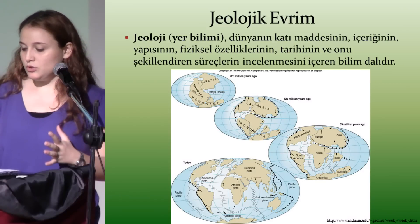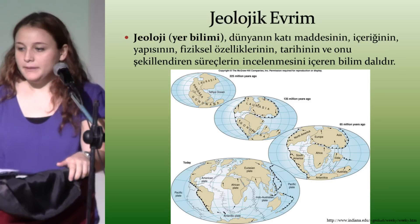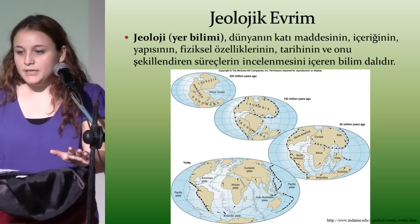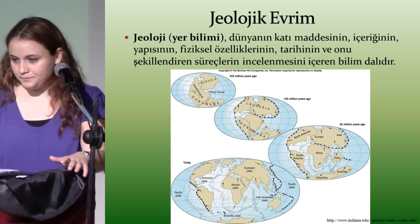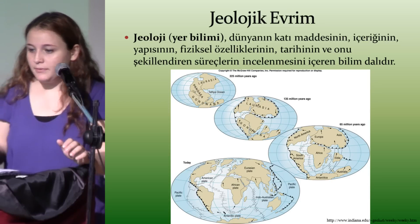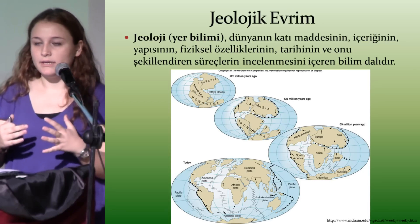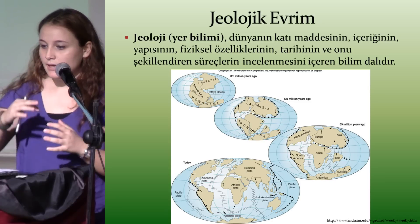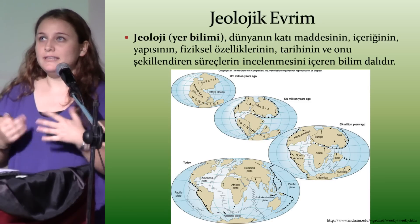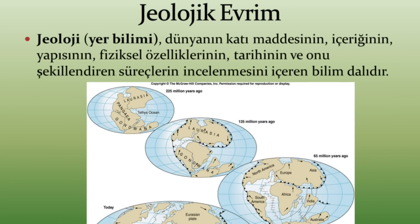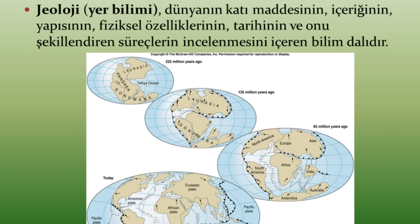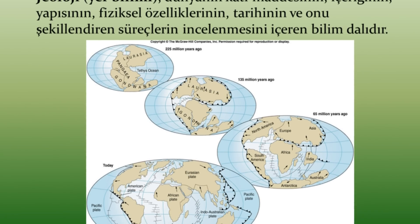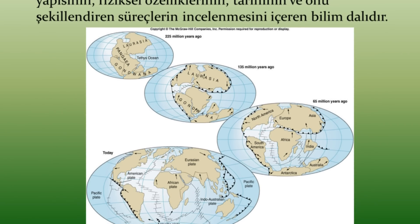Jeolojik evrim nedir? Önce jeoloji nedir, bunu söylemek istiyorum. Jeoloji, yani yer bilimi; dünyanın katı maddesinin içeriğinin, yapısının, fiziksel özelliklerinin, tarihinin ve şekillenme süreçlerinin incelenmesini içeren bilimdir. Jeolojik evrim; kıtaların ve levhaların hareketinden dolayı kıtaların şekil değiştirmesinden kaynaklanır ve bu birçok iklimsel değişime de sebep olur. 225 milyon yıl önce dünya tek bir bütün hâlinde Pangea kıtasını oluştururken, yavaş yavaş kıtalar ayrılmaya başlamış; 65 milyon yıl önce biraz daha bugünkü haline dönmüş ve bugün gördüğümüz dünya meydana gelmiştir.